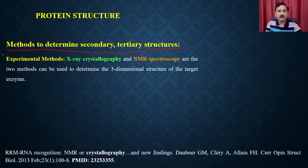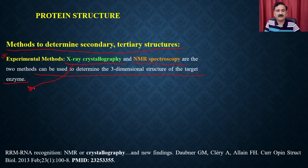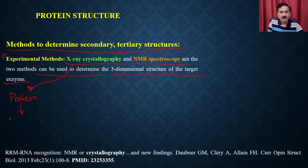There are two approaches to determine secondary or tertiary structures. The first is experimental methods: X-ray crystallography or NMR spectroscopy. For X-ray crystallography, you first isolate the protein for which you want to identify the structures, then you purify it to 100% or more than 90% purity. Once purification is done, you crystallize the protein to produce crystals.